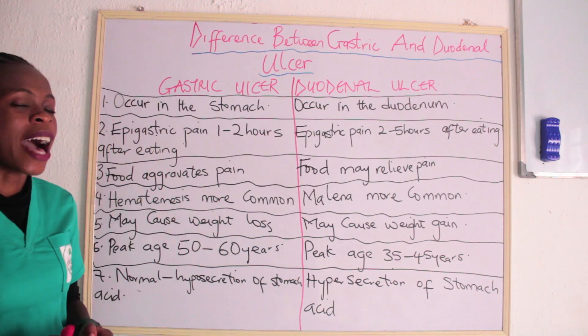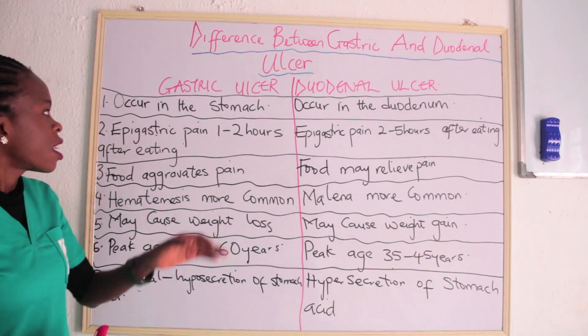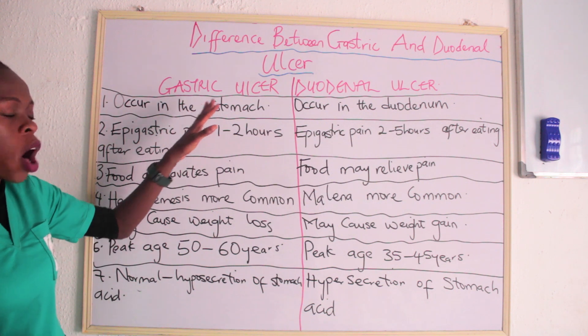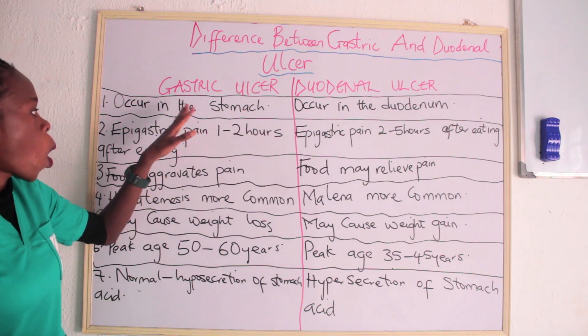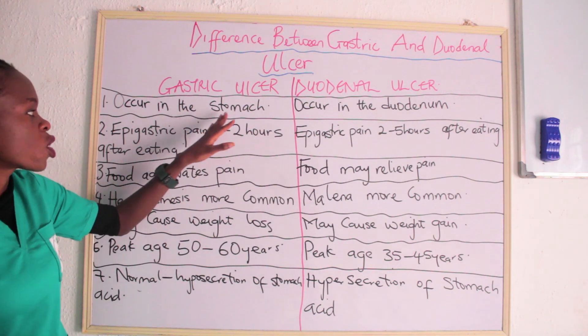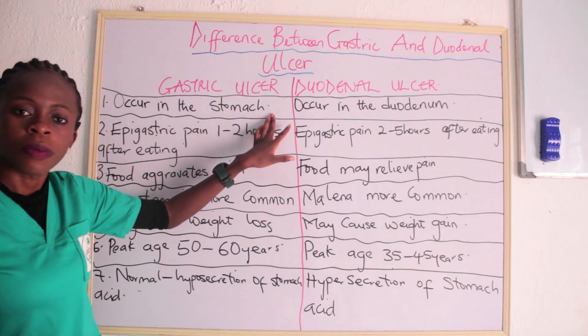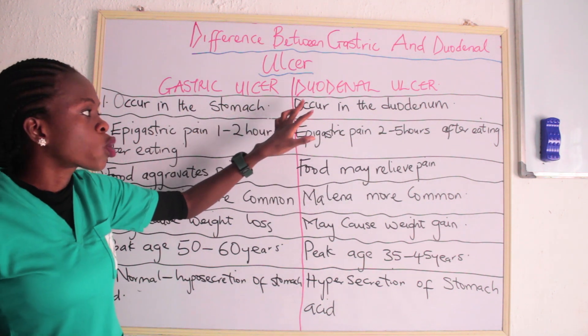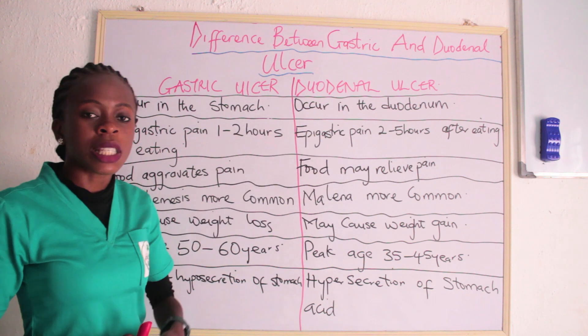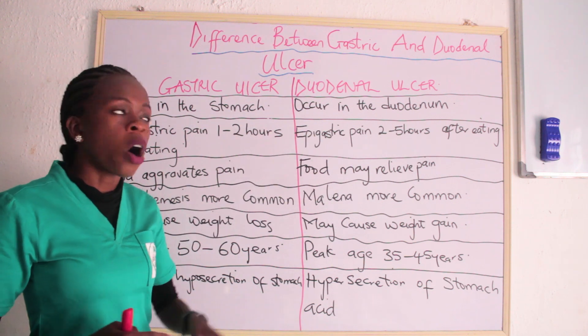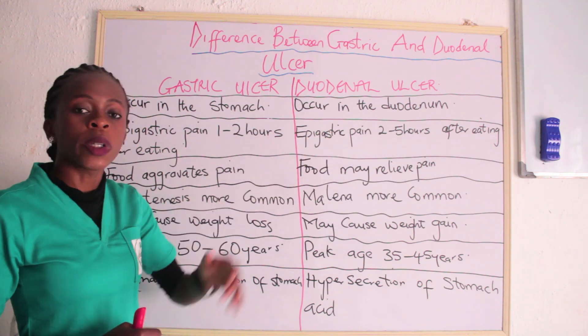The first difference: gastric ulcer occurs in the stomach, while duodenal ulcer occurs in the duodenum.